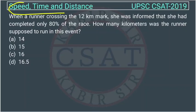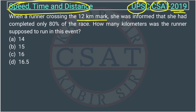This is a question of speed, time and distance asked by UPSC in their CSAT paper of 2019. When a runner crossing the 12 km mark, she was informed that she had completed only 80 percent of the race. How many kilometers was the runner supposed to run in this event?